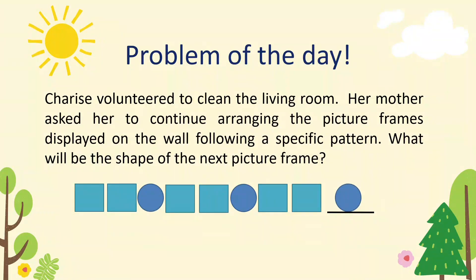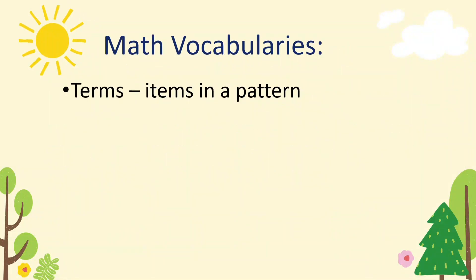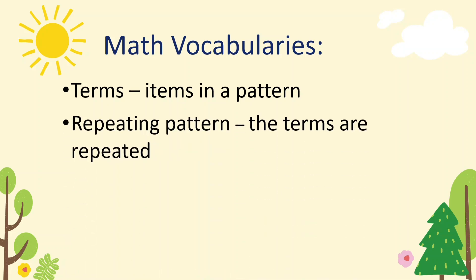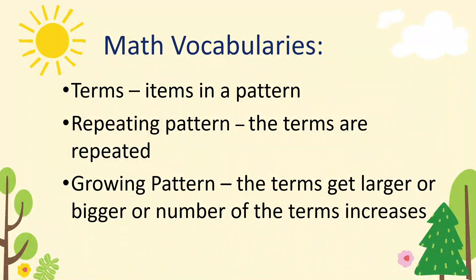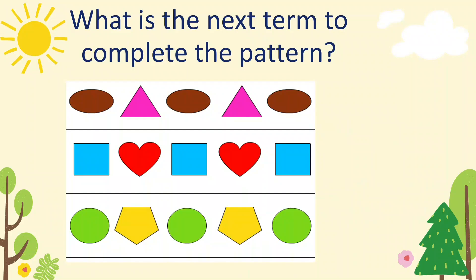Correct — circle! You got it right. Now, here are the math vocabulary terms that will help us in our lesson. Terms are items in a pattern. A repeating pattern is one where the terms are repeated. A growing pattern is one where the terms get larger, bigger, or the number of terms increases. Let's practice — what is the next term to complete the pattern? Look at the color and look at the shape.